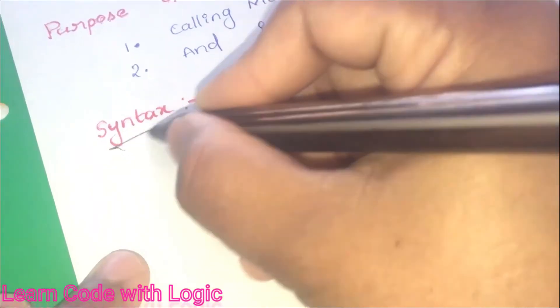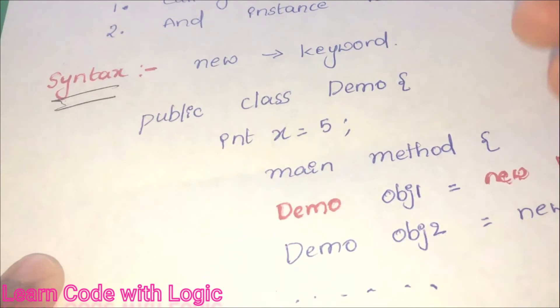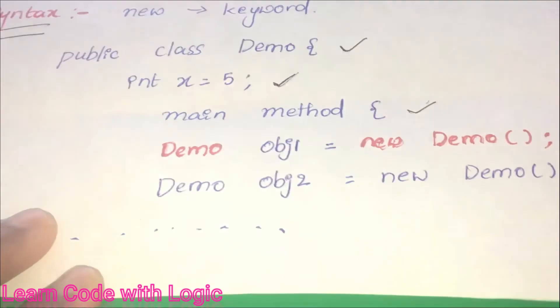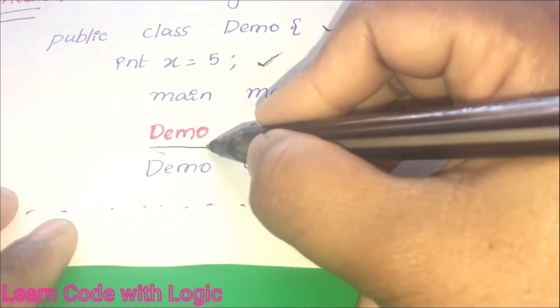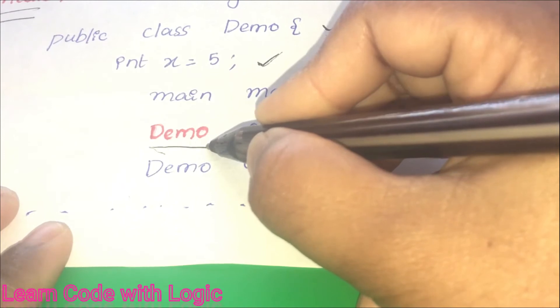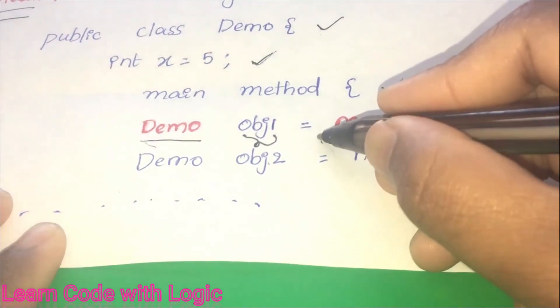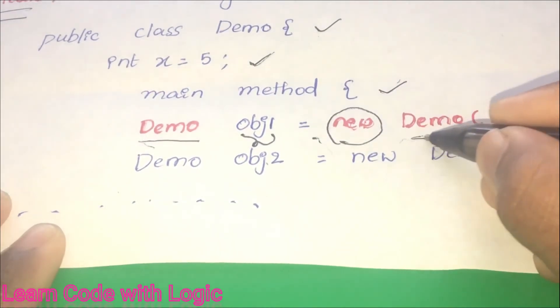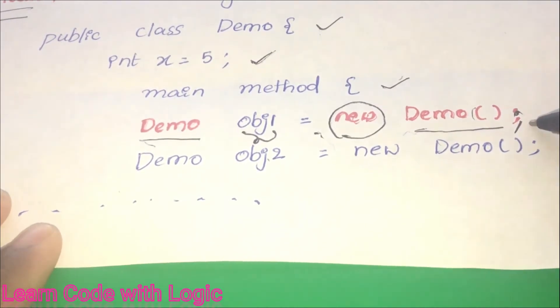The next important thing to understand is syntax. Here I created a class and one instance variable. This is the main method here. Here I am creating objects and the syntax is: first we need to give the class name and object name equals to this new keyword and again class name open and closing parentheses semicolon.